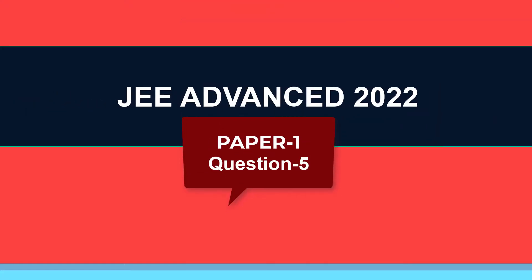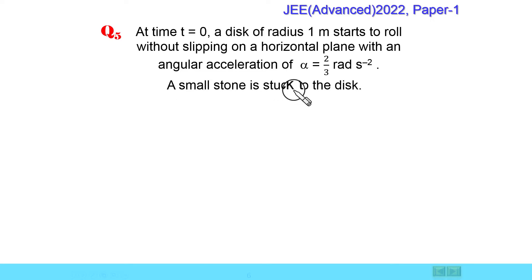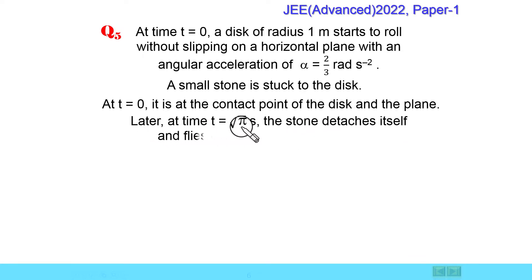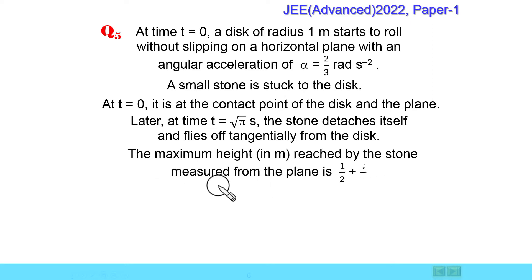Let us take question number 5 of paper 1. In this question, it is given: at t equal to 0, a disc of radius 1 meter is tried to roll without slipping on a horizontal plane with an angular acceleration alpha equal to 2 by 3 radian per second square. A small stone is stuck to the disc. At t equal to 0, it is at the contact point of the disc and the plane. Later, at the time t equal to root pi second, the stone detaches itself and flies off tangentially from the disc. The maximum height in meter reached by the stone measured from the plane is 1 by 2 plus x divided by 10.